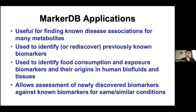You can search MarkerDB through structures, sequences, or text. A lot of people use it to find disease associations for metabolites — for example, what is butyric acid a marker for? It's also useful for finding whether someone else has already found the same markers for a condition like lung cancer, and for finding exposure markers that indicate whether you've consumed citrus fruits, asparagus, or wine. It also allows you to assess whether your newly discovered markers are truly novel or have already been found by others.